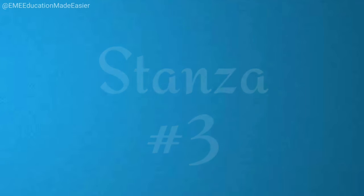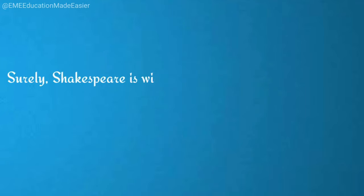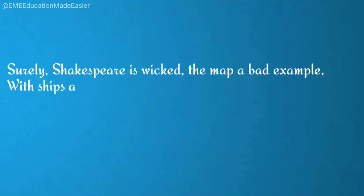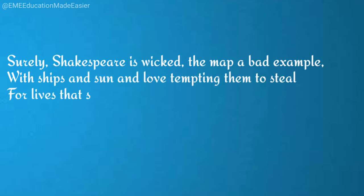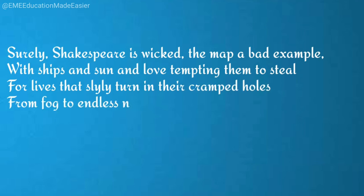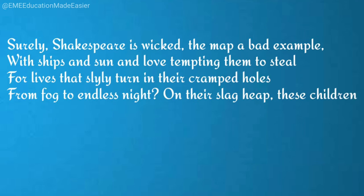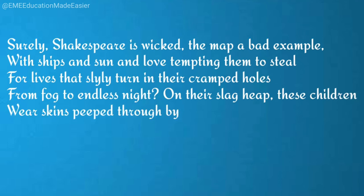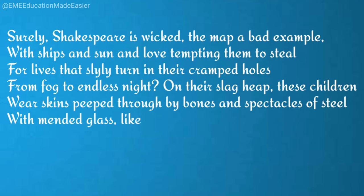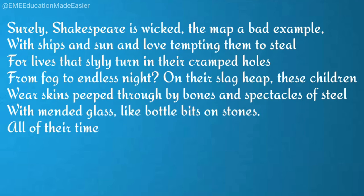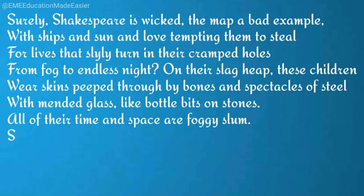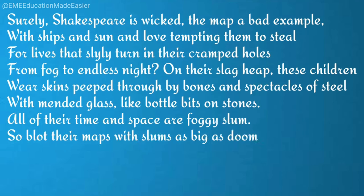Stanza three: 'Surely Shakespeare is wicked, the map a bad example, with ships and sun and love tempting them to steal for lives that slyly turn in their cramped holes from fog to endless nights. On their slag heap, these children wear skins peeped through by bones and spectacles of steel with mended glass like bottle bits on stones. All of their time and space are foggy slum. So blot their maps with slums as big as doom.'